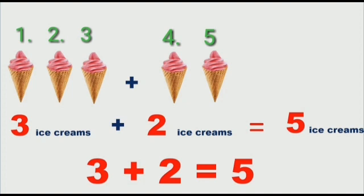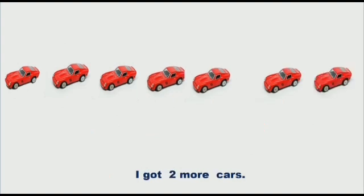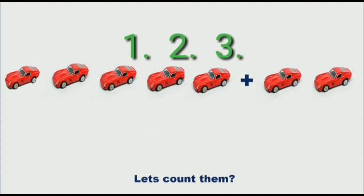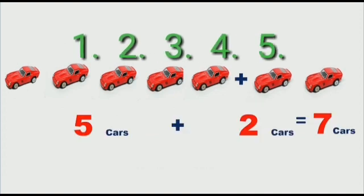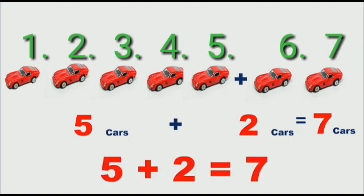Let's take another example. I have five cars. I got two more cars. So how many total cars do I have? Let's count them. Five cars plus two cars is equals to seven cars. So what we did? We add them. Five plus two is equals to seven. So all together I have seven cars.